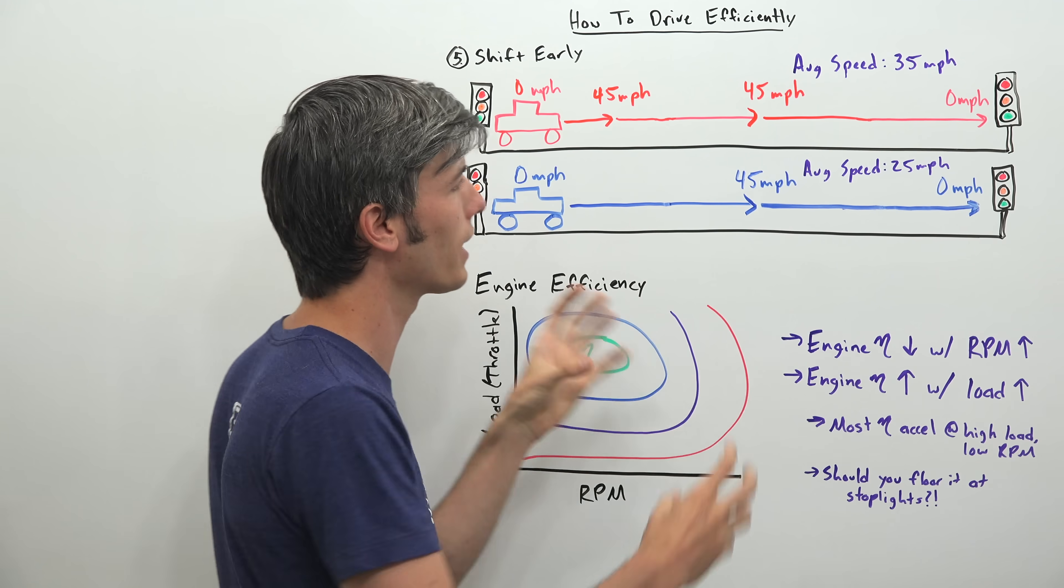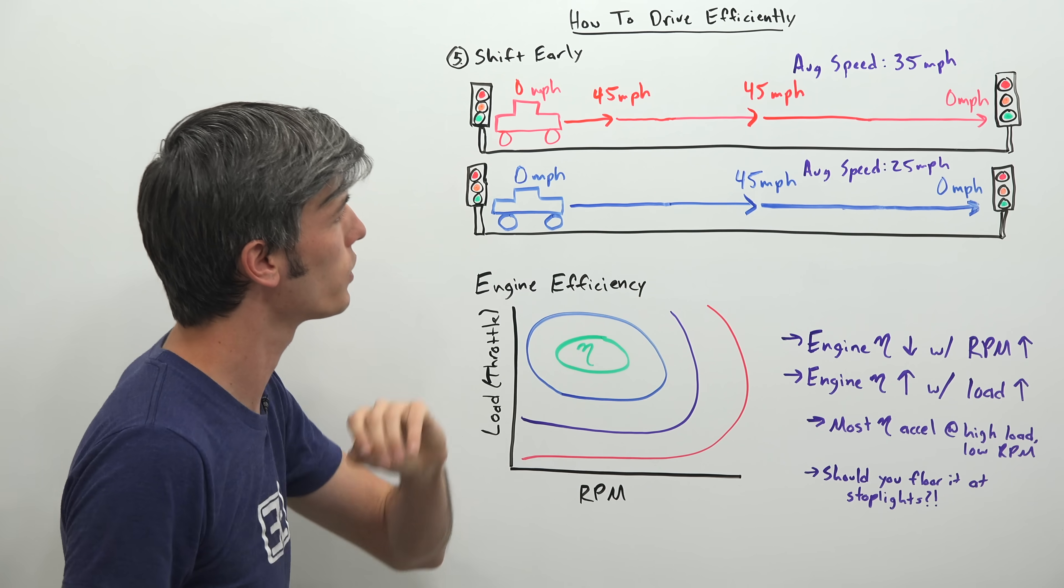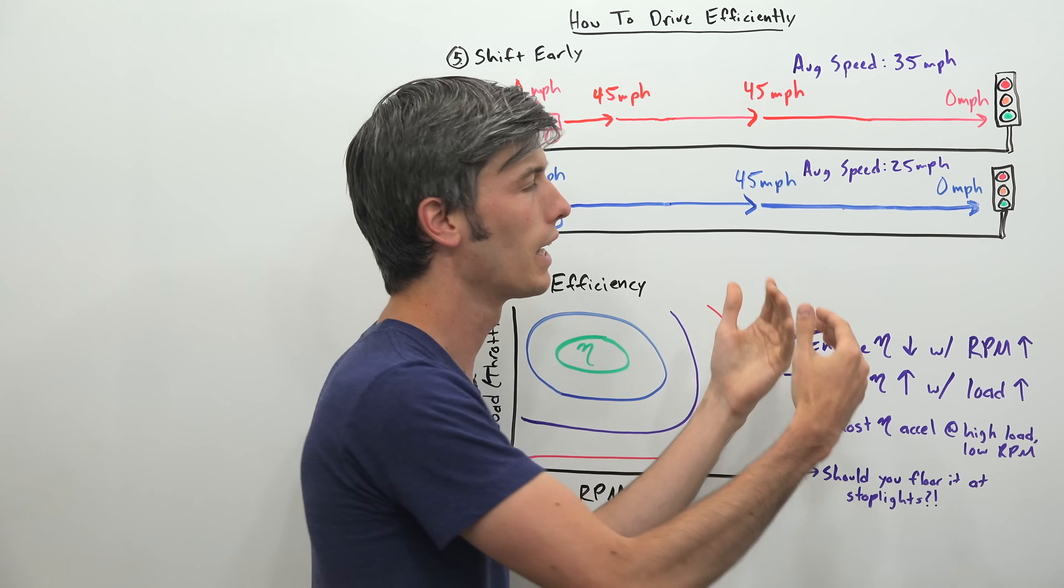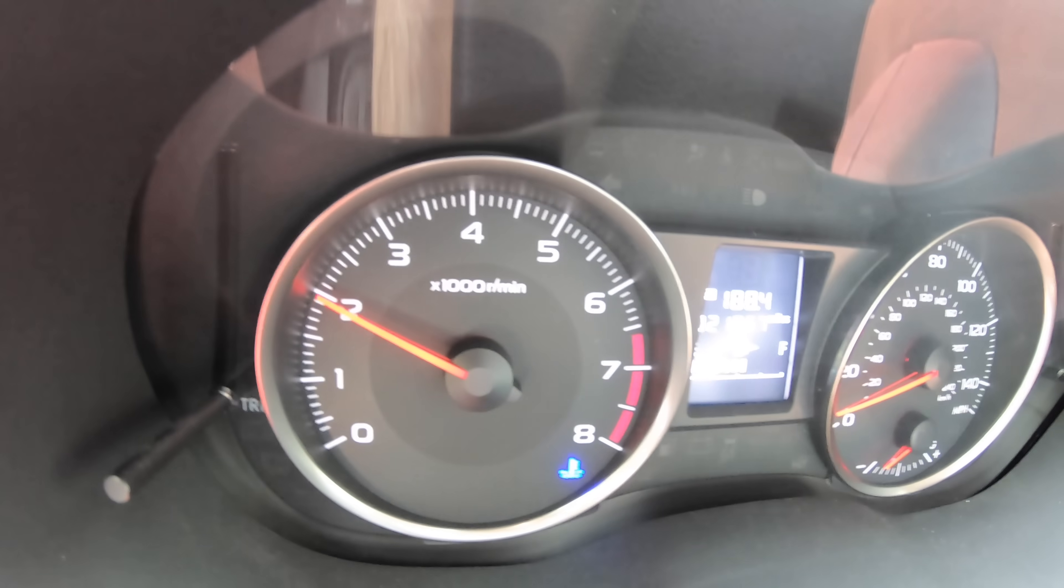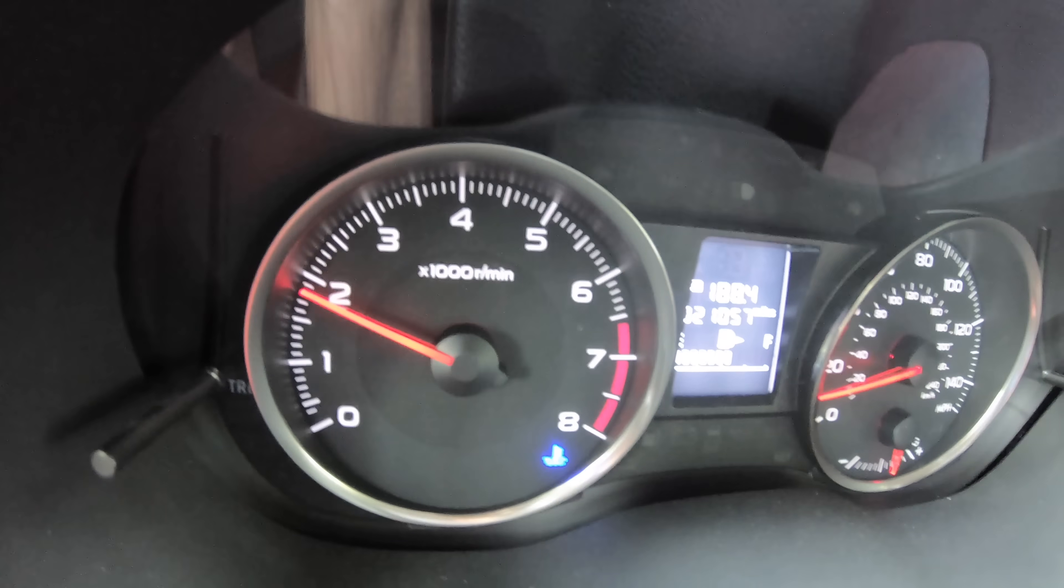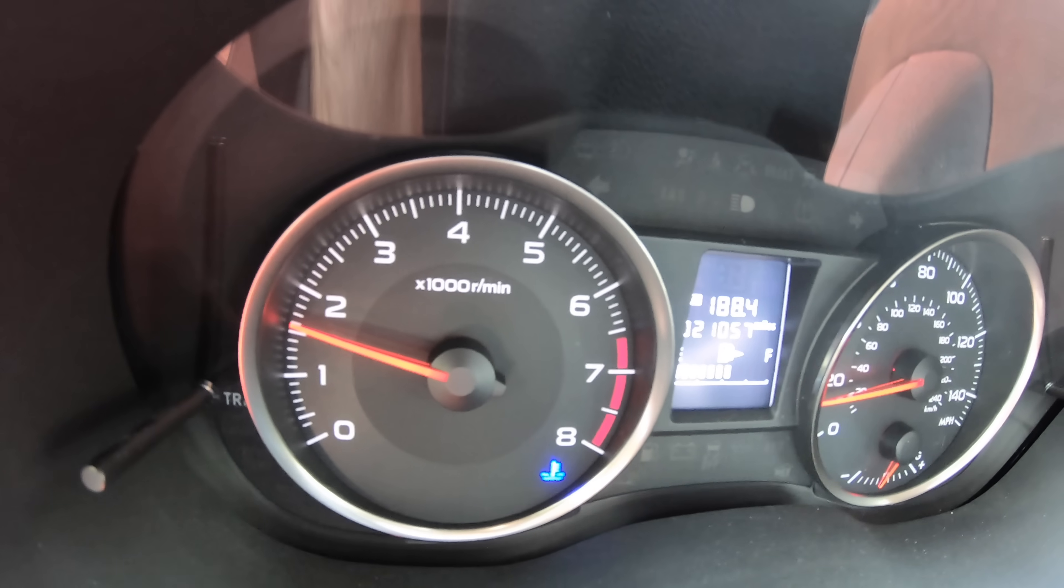So generally speaking, and yes there are different circumstances where it could go the other way, but generally speaking, you're going to be better off and get better fuel economy if you have that lower average speed. So you accelerate more slowly up to speed and overall maintain a lower average speed and better fuel economy.